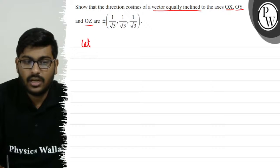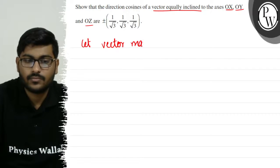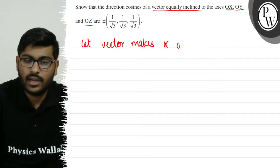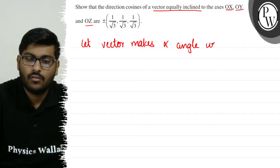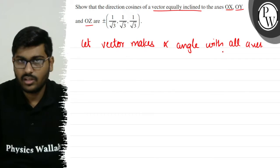So we will say, let the vector make alpha angle with all axes. So the vector makes alpha angle with the x, y, and z axes.